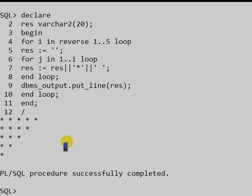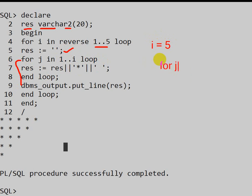Let us trace through the execution. We declare the variable result of type varchar2. The for loop runs FOR i IN REVERSE 1..5. First, i value will be 5. Result is assigned to an empty string. The inner loop will be iterated 5 times — for j from 1 to 5.